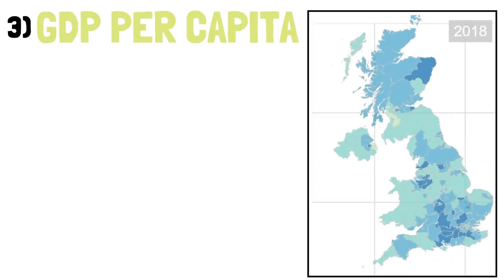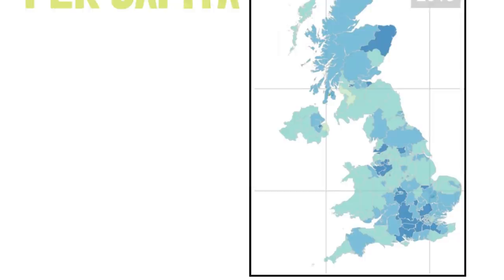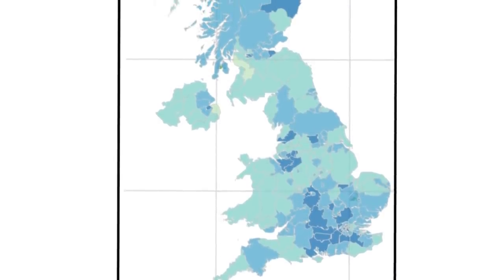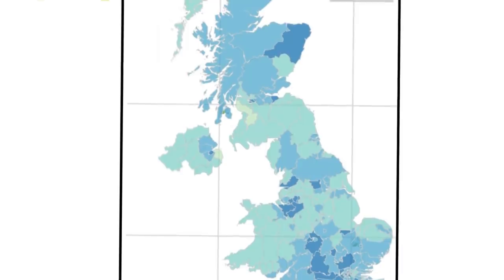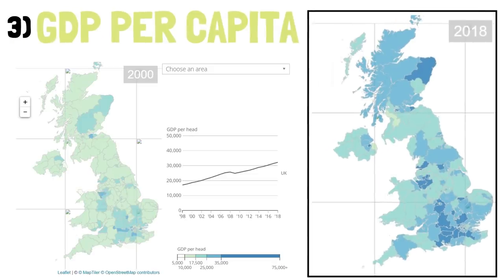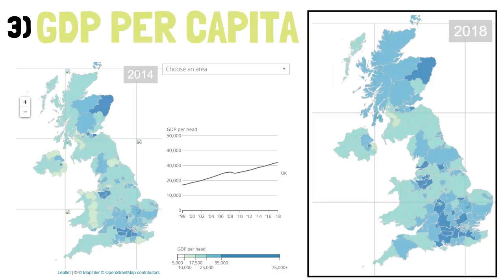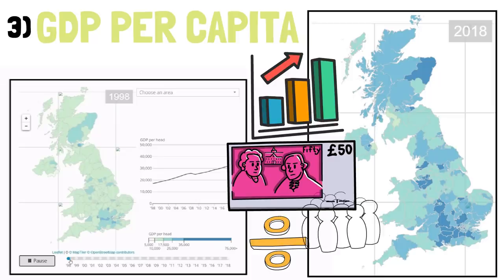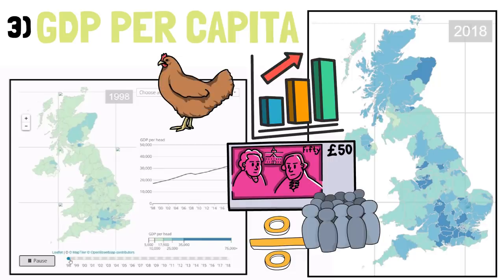This map shows which areas have the highest GDP per capita, though the data is from 2018. The darker the blue, the higher the value. Urban centers have the highest values, mostly concentrated in southern and eastern England, though cities like Liverpool, Manchester, and the Belfast region also rank highly. Scotland has high GDP per capita in many regions, while Wales lags behind. It's worth noting that GDP per capita doesn't tell us how rich each individual actually is — it simply divides total GDP by population, not how wealth is actually distributed.